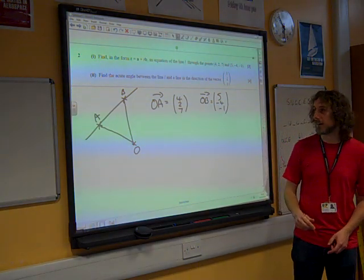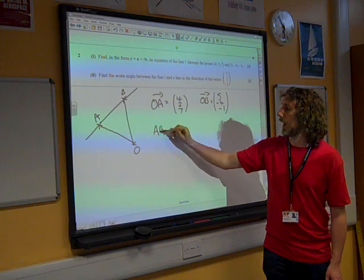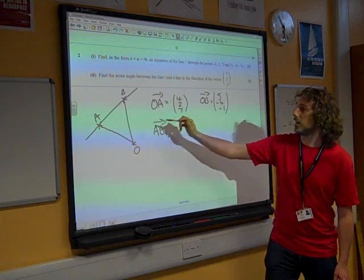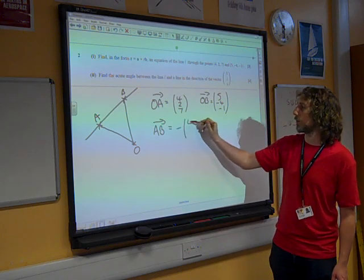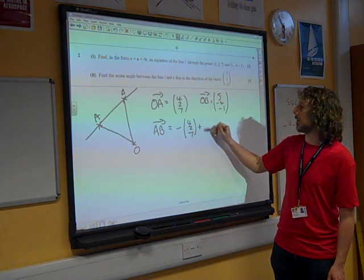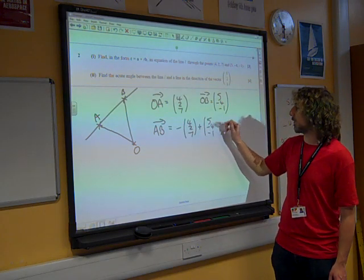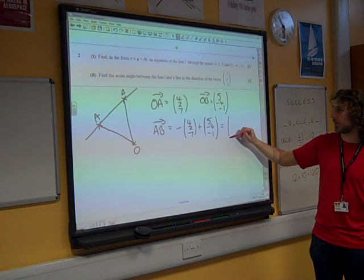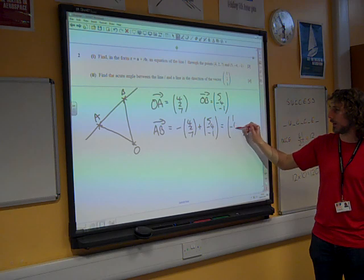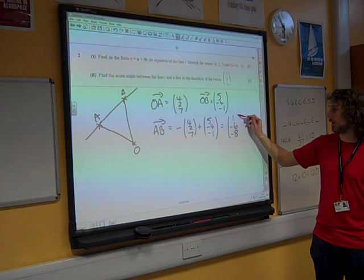So, we want to find the vector between them. AB is minus that one plus that one. So, it's minus 427 plus 5 minus 4 minus 1, which gives us, what's that, 1, negative 6, negative 8.